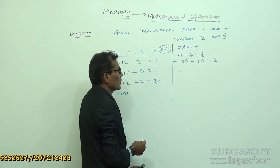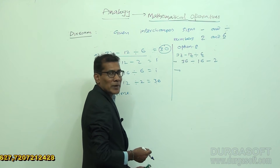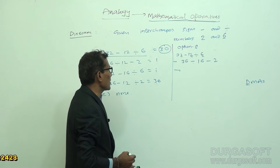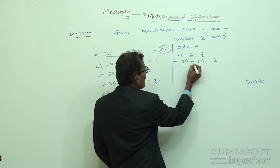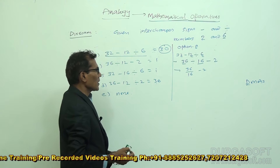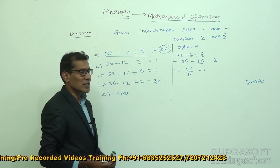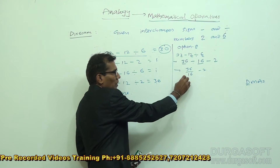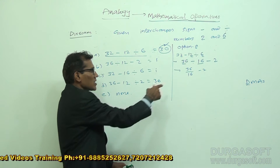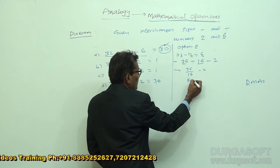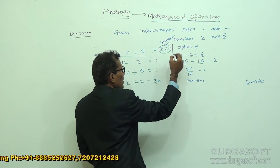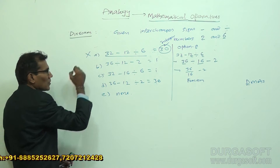Let us find the result. According to DMAS, division is operated first. So we have 36 divided by 16, then minus 2. However, 36 is not exactly divisible by 16, so we get a fraction. The result of a fraction minus an integer is a fraction, but the required result is 30, which is an integer. Therefore, option A is wrong.